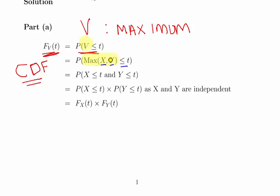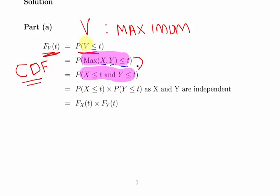Essentially, we can restate this as two separate events: the probability of X less than or equal to t, and the probability of Y less than or equal to t. This is the key trick — being able to restate the maximum condition as that joint condition. Since X and Y are independent, we apply the independence rule: probability of A and B equals probability of A times probability of B. That gives us F_X(t) times F_Y(t), which is exactly what we want — the product of the cumulative distributions of X and Y.